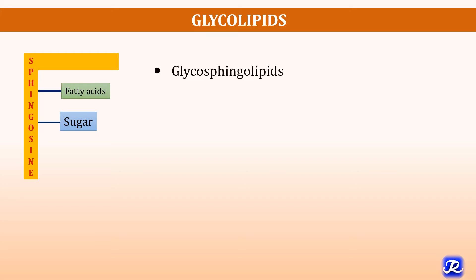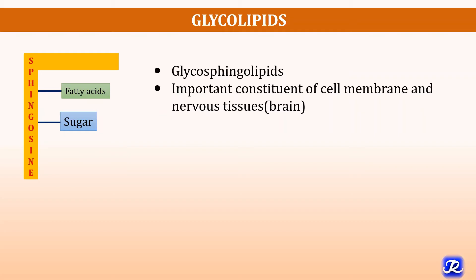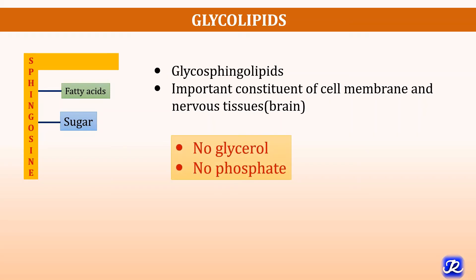Glycolipids are also called as glycosphingolipids. They are the important constituent of cell membrane and nervous tissue. In glycolipids, glycerol is not present and it is not attached to phosphate. So in glycolipids only sphingosine, fatty acids, and sugar — that is carbohydrate — is present.